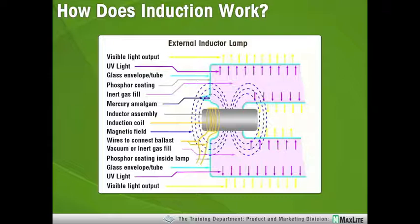Because we have literally no moving parts in induction, the weak link is not the cathode. The weak link becomes the electronic components in the frequency generator, or the magnetic generator.